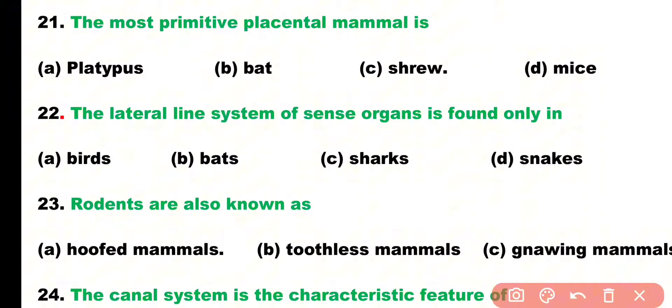Question number 22. Lateral line system of sense organs is found only in: birds, bats, sharks, or snakes? Correct answer is Option C. Lateral line system of sense organs is present in sharks, which belongs to class Pisces.